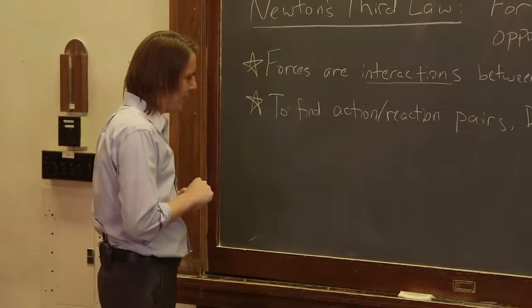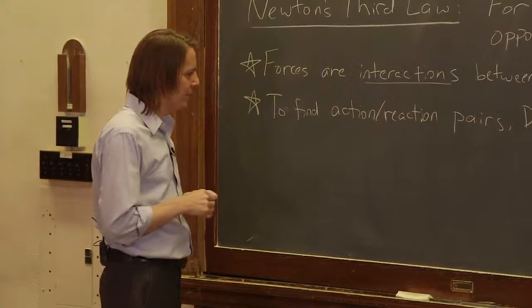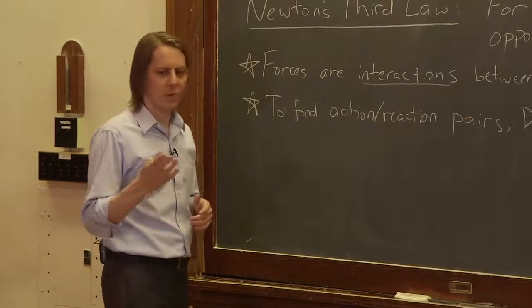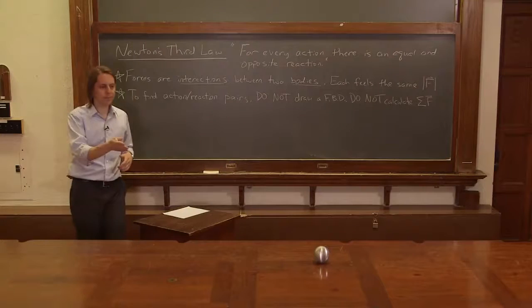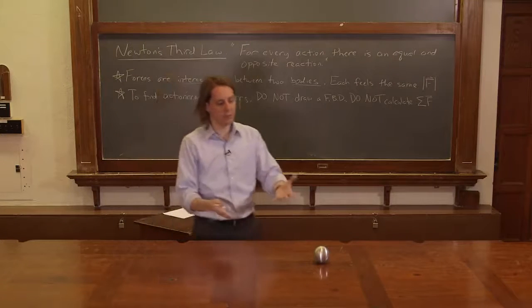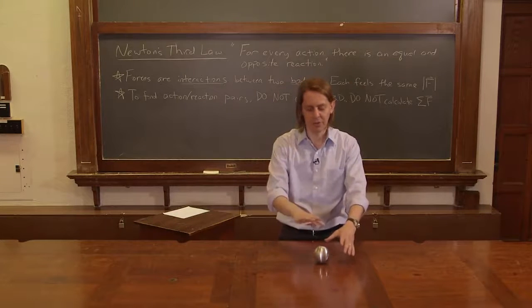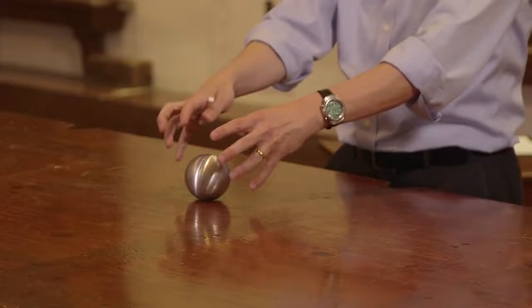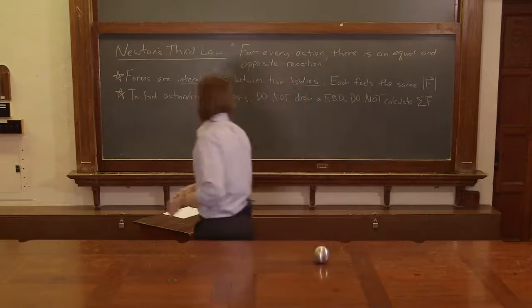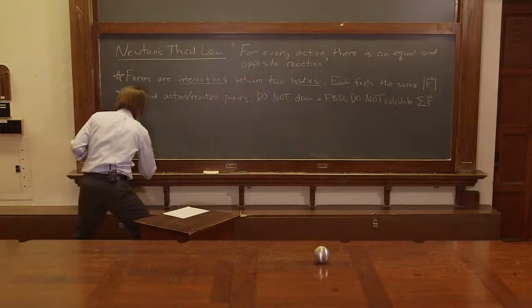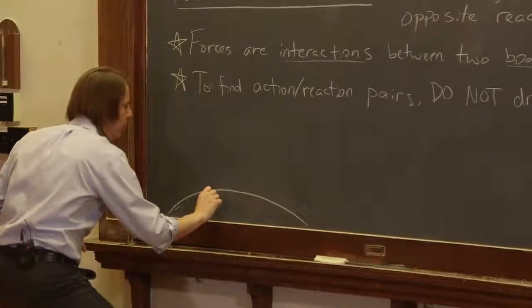Let's do an example - come up with the action-reaction pairs for something just resting. Here I have Al, resting on the table and not moving. I'm using Al because Al is taking a personal day. Here's Al sitting here, not moving. Let's draw that situation. To make sure we capture all the pairs, we're going to draw the whole thing.